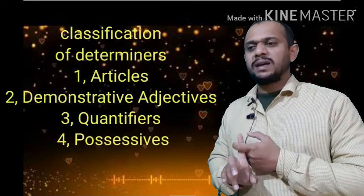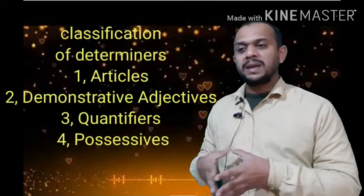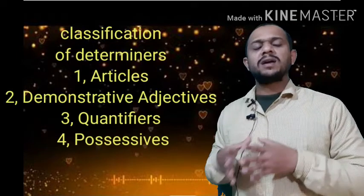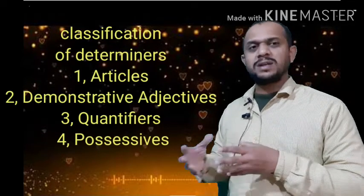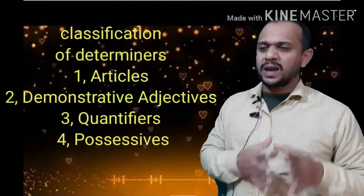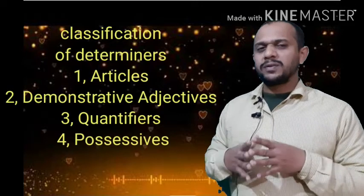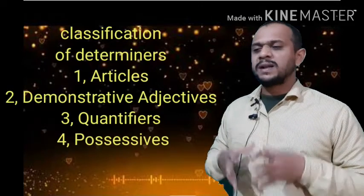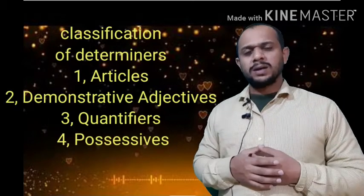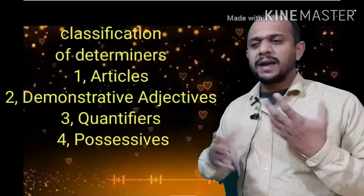In quantifiers: definite quantity — one, two, three, or first, second, third. Indefinite quantity — some, many, much, few, a few, the few, a little, the little. Distributive quantity — each, every, either, neither. Comparative quantity — less, more, fewer. Possessive quantity — my, mine, yours, our, her, his.